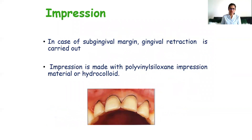Impression procedure: in case of a sub-gingival margin, gingival retraction is carried out — whether chemical, mechanical, or chemical-mechanical. Then impression is made with polysiloxane impression material or irreversible hydrocolloid. Polyvinyl siloxane impression material is used because it has become the material of choice.